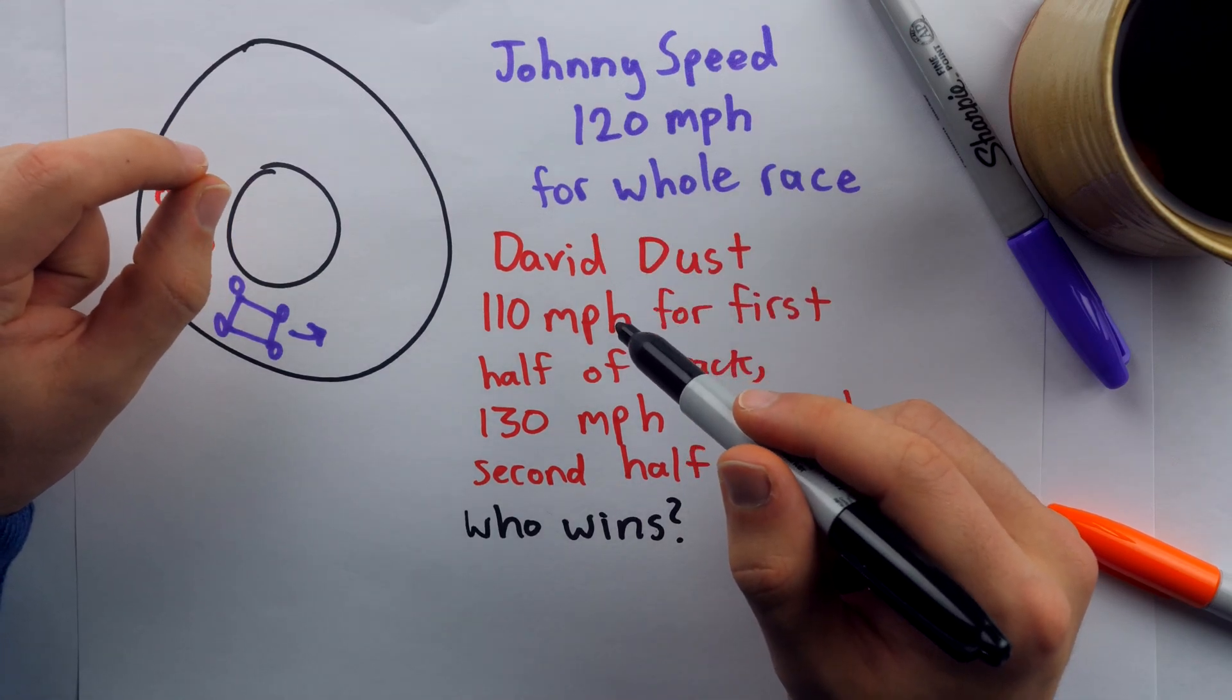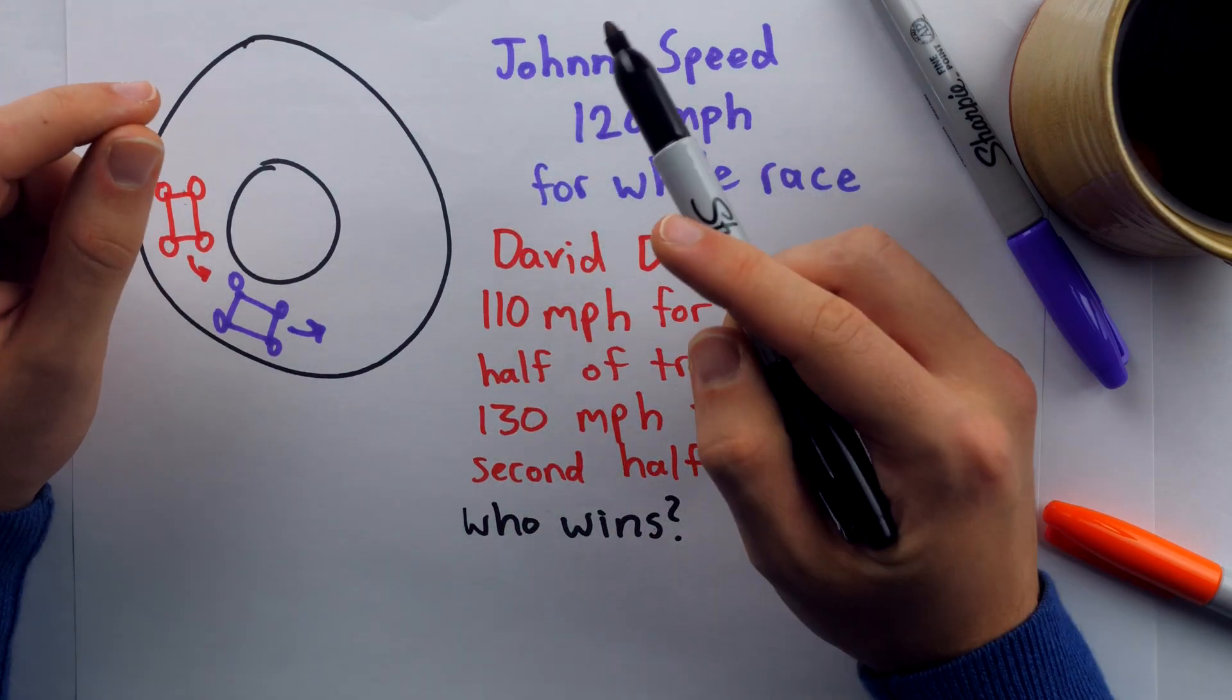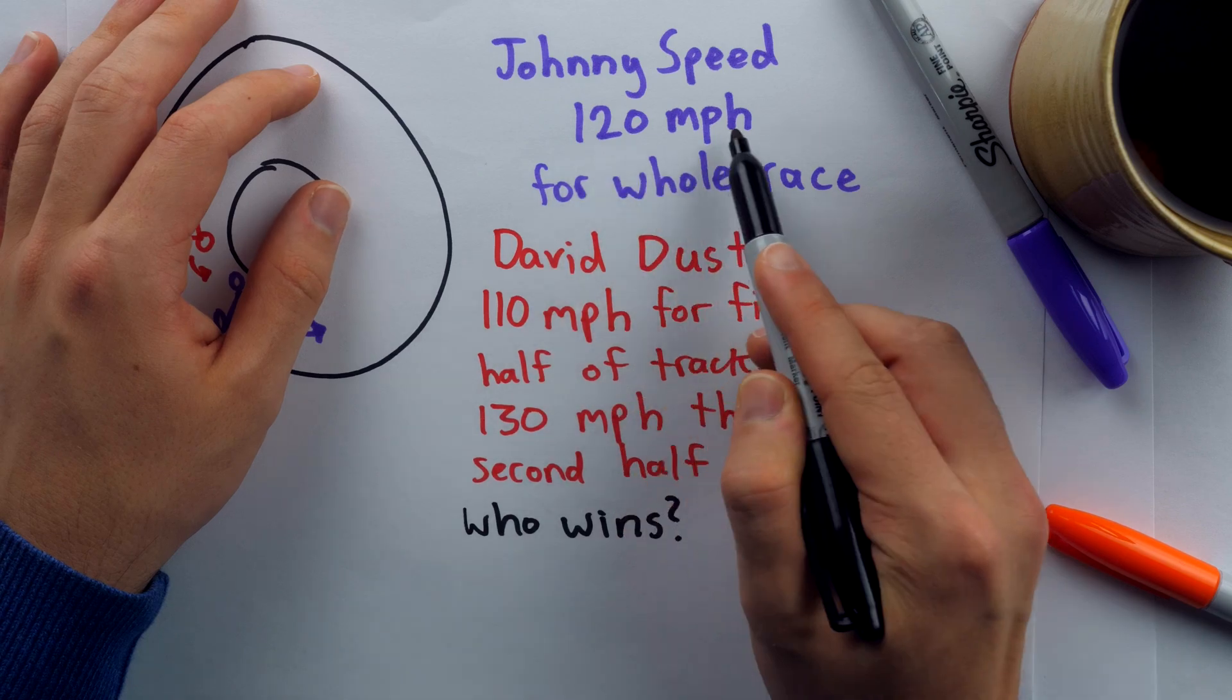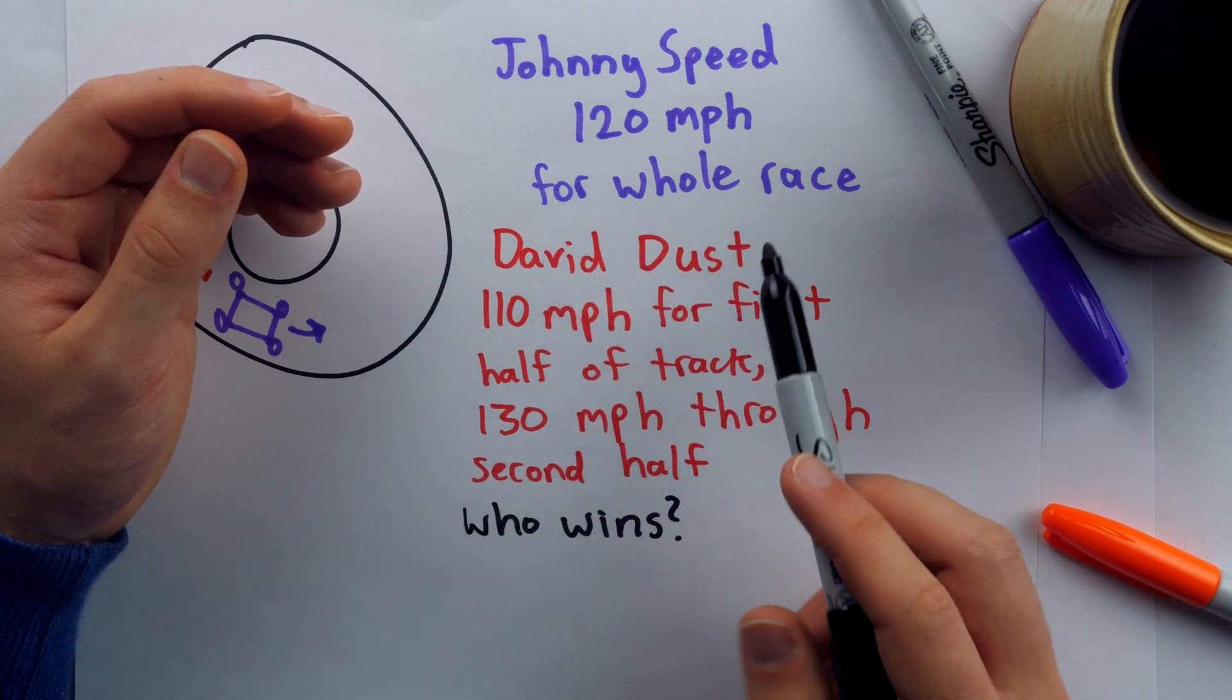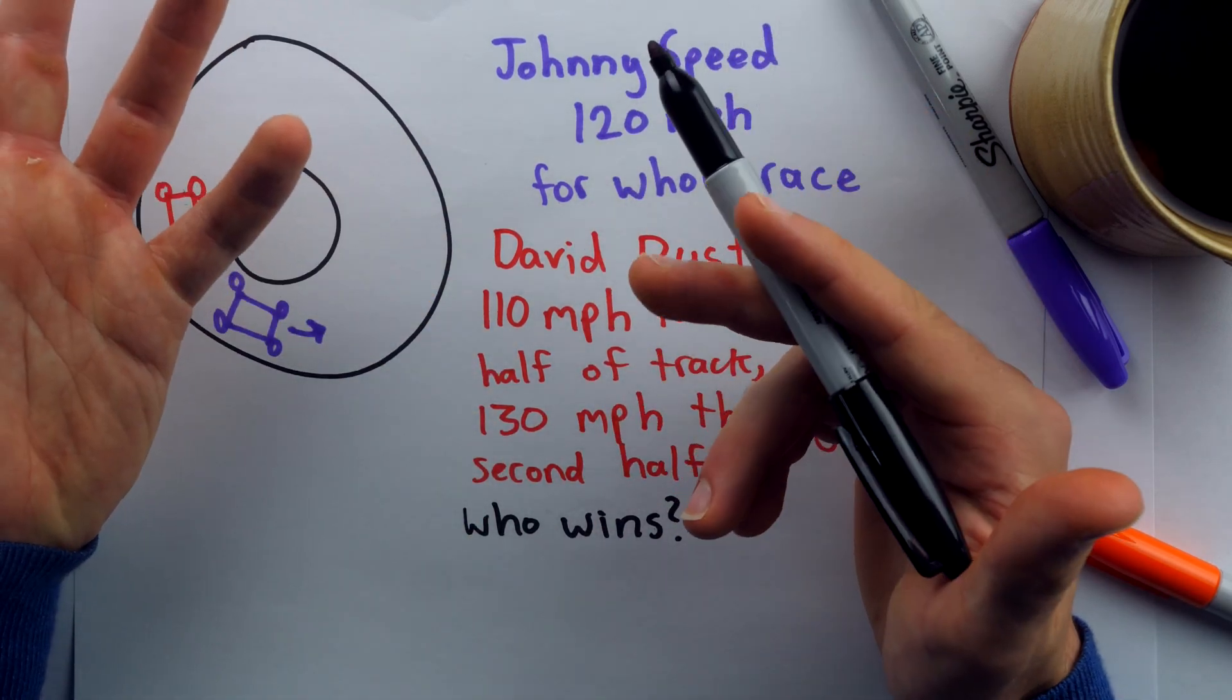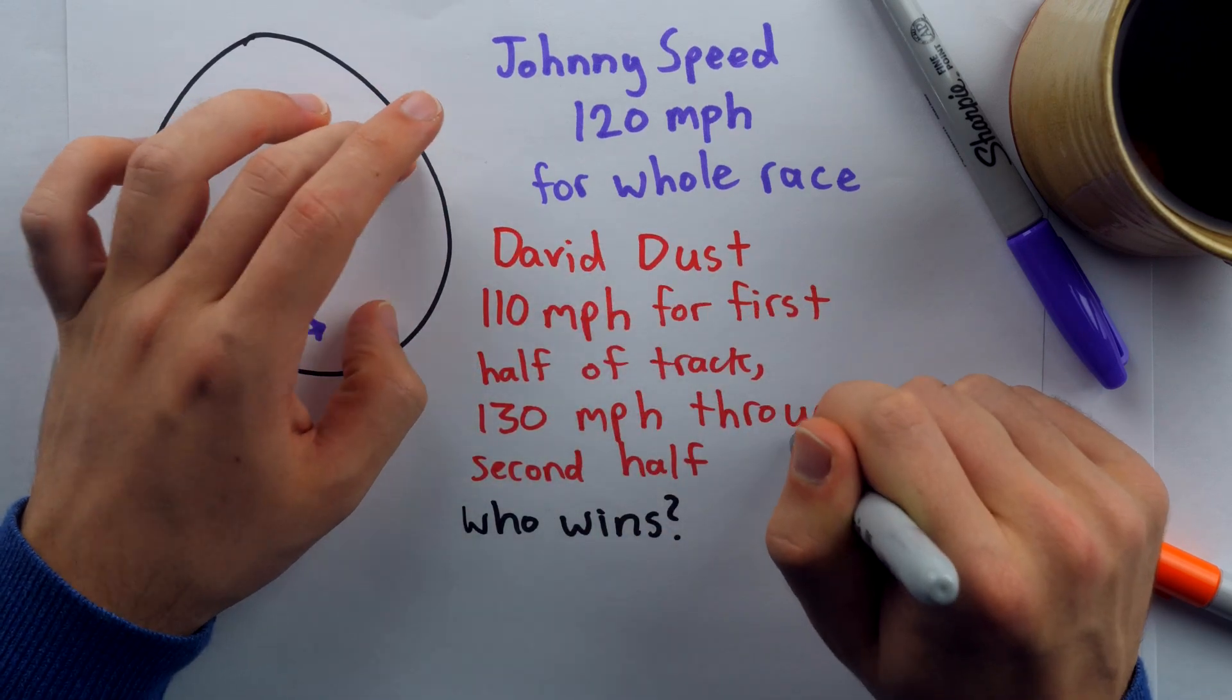It's easy to jump to assumptions in this problem and make a mistake in interpreting the information. If you do that, you might come to the conclusion that Johnny Speed and David Dust are actually going to tie, because their average speeds are the same, right? Johnny Speed's average is, of course, 120 miles per hour, because he's going at that speed for the whole race. And David Dust's average speed is also 120 miles per hour, because it's halfway between 110 and 130. So if their average speeds are the same, then they must tie. But if you think their average speeds are the same,